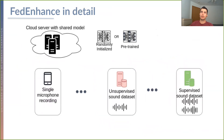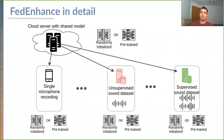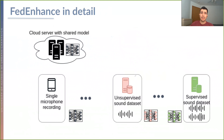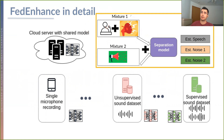In more detail, we'll see how FedEnhanced works. We begin with a randomly initialized or a pre-trained network that the server has — this is really important, and we'll see why in a little bit. The model distributes this version to each one of those clients, so each client has the same speech enhancement model. For the unsupervised training case, we have a mixture of clean speech plus some noise, and a second mixture containing only a noise recording. We have a separation model with three output slots.